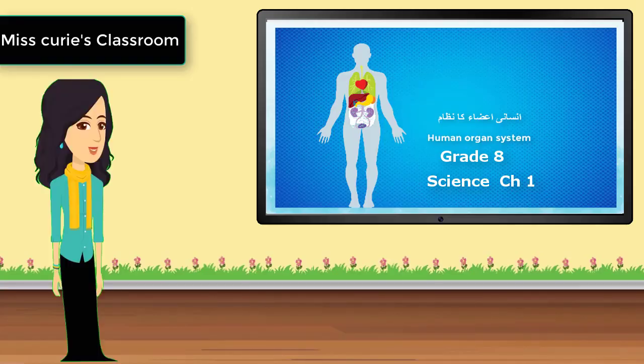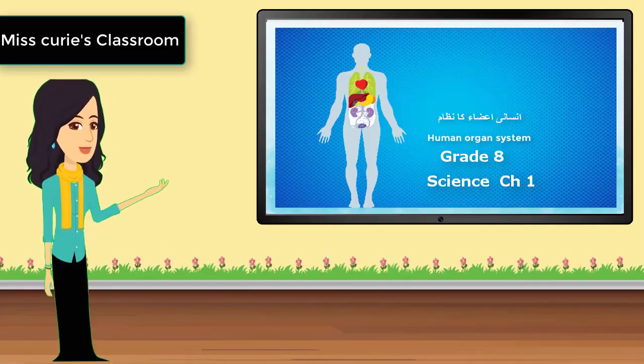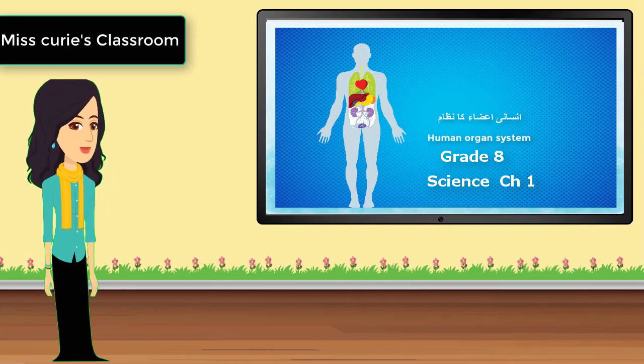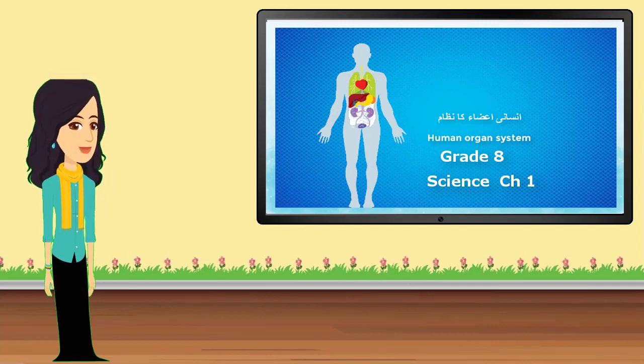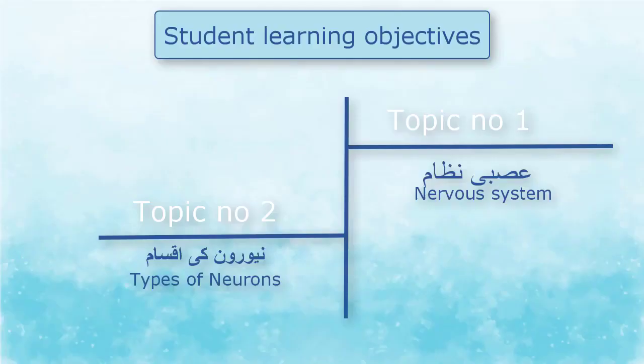As-salamu alaykum, bachiyo. Aaj hem class 8 ki science ke chapter number 1, human organ system ke baare meh pardhti hain. Topic number 1: aspi nizam, nervous system.